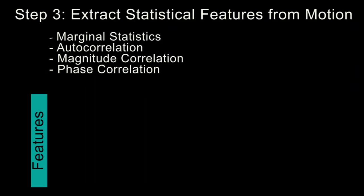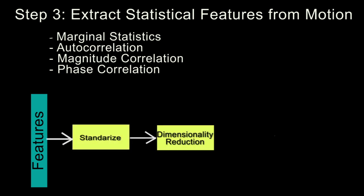From this motion decomposition, we extract four different types of features. These features were previously developed to compactly represent static image textures. These features are then standardized and reduced in dimensionality using PCA.